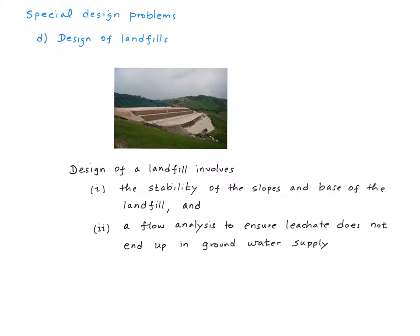My final example here is the design of landfills. The landfills will have to be designed properly. In the olden days, landfills were not designed properly, and as a result the ground under the landfill became contaminated. Sometimes the leachate — the chemical from the landfill — travels through the soil reaching the groundwater supply. You can't do that anymore. The two issues involved in the design of landfills are: number one, the stability of the slopes and the base of the landfill so that it does not collapse or crack allowing leachate to escape; and number two, a flow analysis to make sure that the leachate does not end up in the groundwater supply.